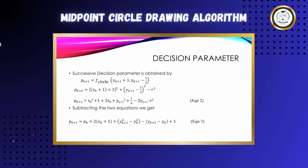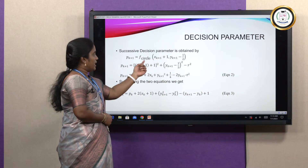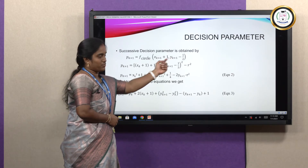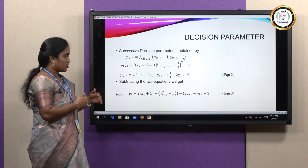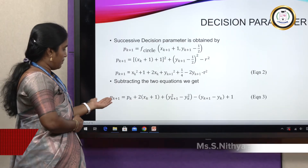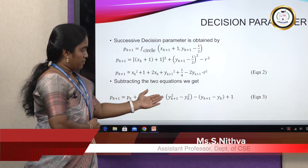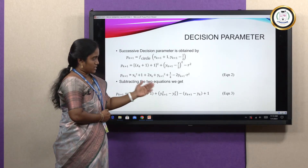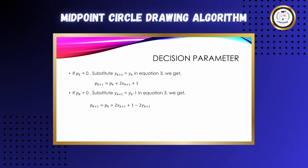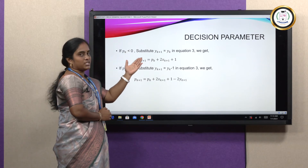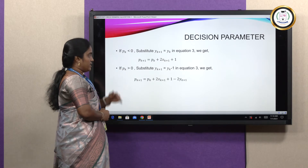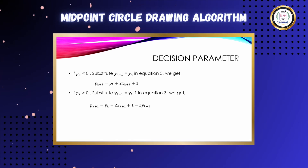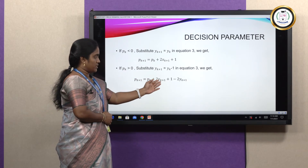To find pk+1, we substitute k+1 in place of k in the equation, expand the squared terms, then subtract Equation 1 from the pk+1 expression. We get: pk+1 = pk + 2(xk+1) + (yk+1)² − yk² − (yk+1 − yk) + 1. There are two cases: when pk < 0, we set yk+1 = yk (y stays constant), giving the first case update formula. When pk > 0, we set yk+1 = yk − 1 (y decrements), giving: pk+1 = pk + 2(xk+1) + 1 − 2(yk+1).